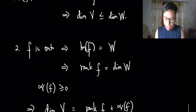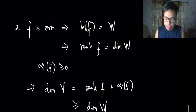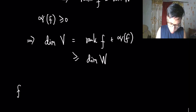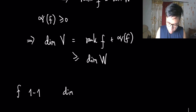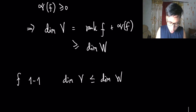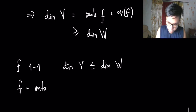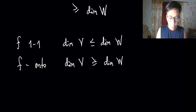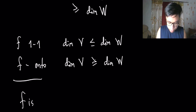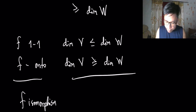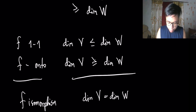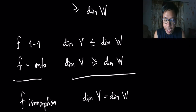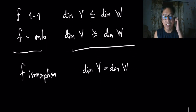Combining results: when f is one-to-one, dim(V) ≤ dim(W); when f is onto, dim(V) ≥ dim(W). When f is an isomorphism — both one-to-one and onto — combining both inequalities gives dim(V) = dim(W). This completes the proof of number three.